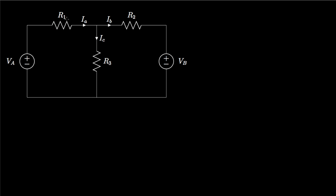Labeling the voltage across each resistor: V1 with polarity dropping in one direction, V2 across the second resistor, and V3 across the third resistor. Once those voltages are labeled, we can use Kirchhoff's voltage law to write two equations in terms of these voltages.